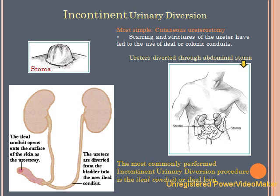To prevent this, they create an ileal conduit using a short segment of the small intestine. One end of the removed short segment of the intestine is placed at the skin surface to create the stoma, and the ureters are then attached to the other end of the segment of intestine.